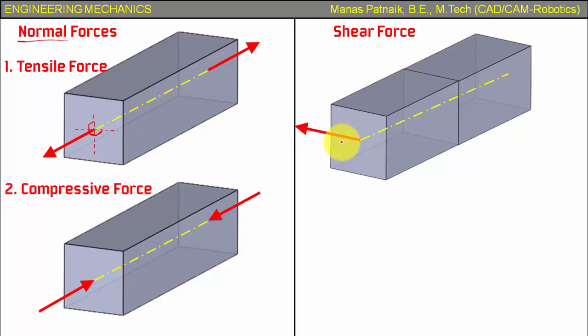If you watch carefully guys, here the force was making a 90 degree angle with the cross section, but here this force is parallel to the cross section - that is one condition, parallel to cross section. And here the force applied was perpendicular to cross section, that's the first difference.